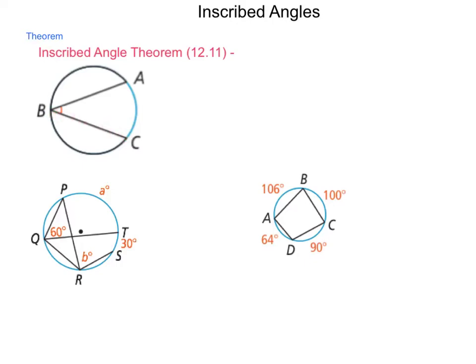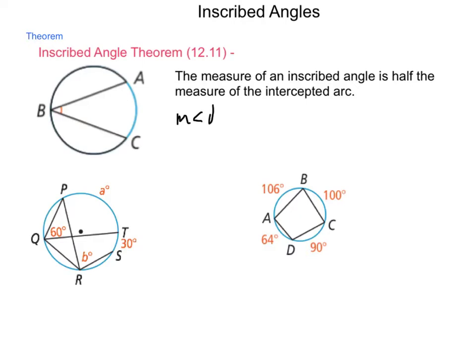And our inscribed angle theorem, theorem 12-11, talks about the angle measurement of this relationship. The measure of an inscribed angle is half the measure of the intercepted arc. So, in the diagram that is shown, we would have that the measure of angle B is one-half the measure of arc AC.